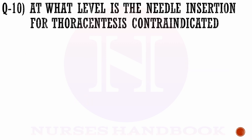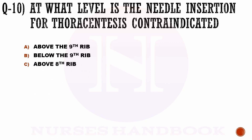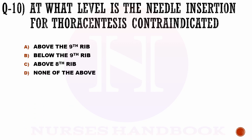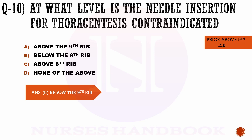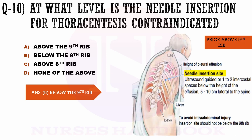Question number 10 / Question number 11. At what level is the needle insertion for thoracentesis contraindicated? Option a) above the 9th rib, option b) below the 9th rib, c) above the 8th rib, and d) none of the above. The correct answer is option b, below the 9th rib, in order to prevent subdiaphragmatic or intra-abdominal injury.